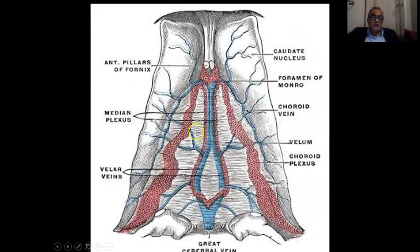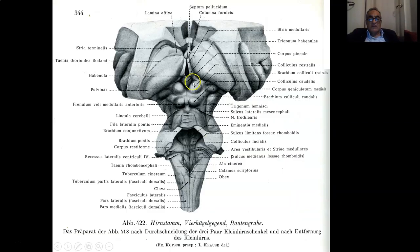Another view showing the superior layer of tela choroidea, the velum interpositum, the choroid plexus, and internal cerebral veins in the roof of the third ventricle. This is another view showing the pineal region and habenular areas, showing the stria medullaris, and showing the two thalami.